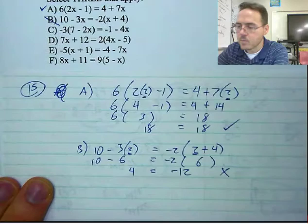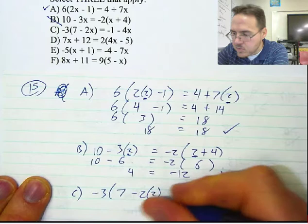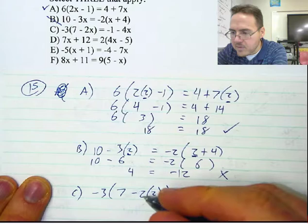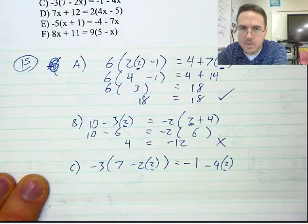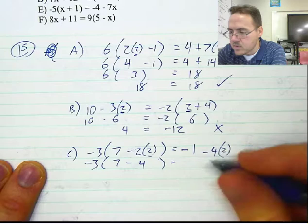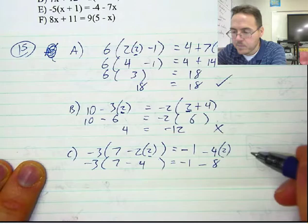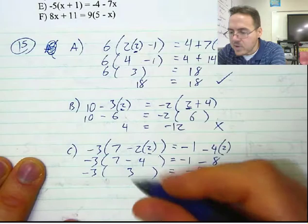Problem C: substituting in, negative 3 parentheses 7 minus 2 times 2 end parentheses equals negative 1 minus 4 times 2. That's negative 3 times 7 minus 4 equals negative 1 minus 8. So negative 3 times 3 equals negative 9 — true! We have to find 3 that apply and it looks like we've already got 2 of them.